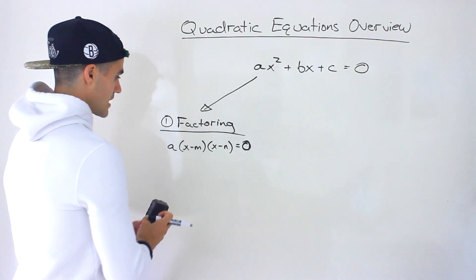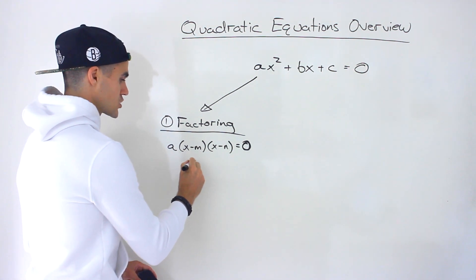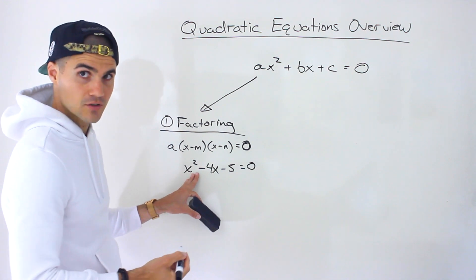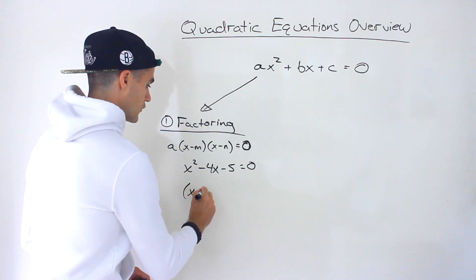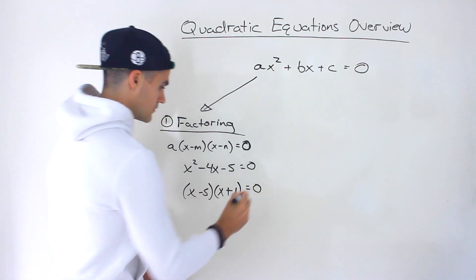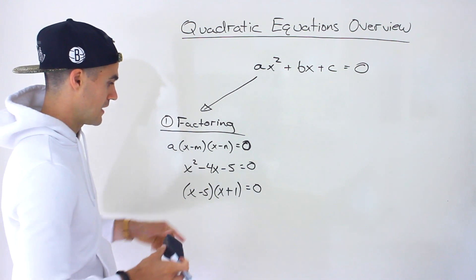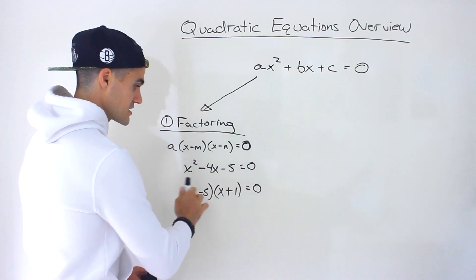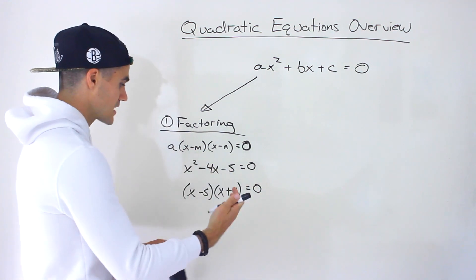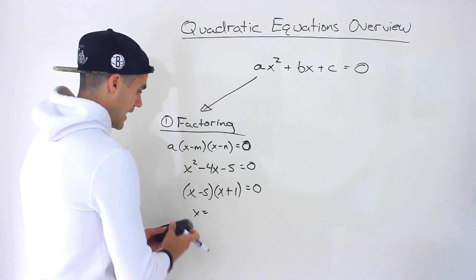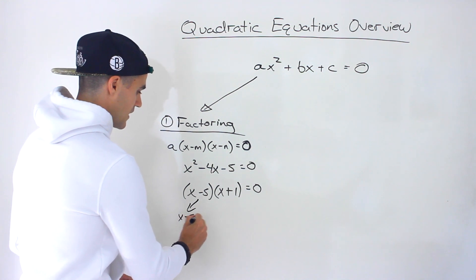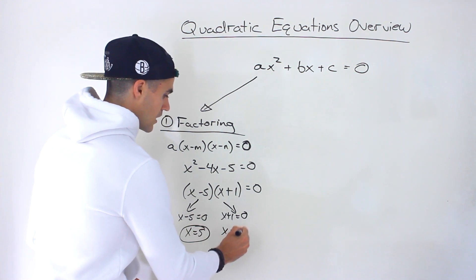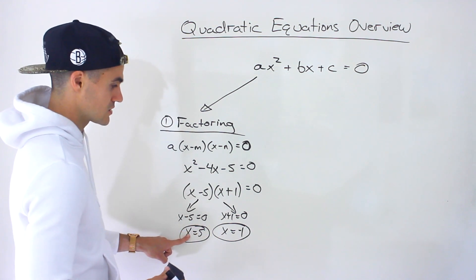So let's do an example. If I have something like x squared minus 4x minus 5 equals 0, what we can do is factor this. And hopefully at this point you're fairly comfortable with factoring. This quadratic factors, and from the factored form we can tell when each bracket equals 0. This is going to happen at an x value of 5 or an x value of negative 1. So those are the two solutions.